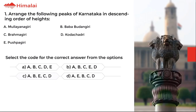Question number 1. Arrange the following peaks of Karnataka in descending order of heights. A. Malayanagiri, B. Baba Badangiri, C. Brahmagiri, D. Kodachadri, E. Pushpagiri. Select the code for the correct answer from the options given below. The correct option is C.